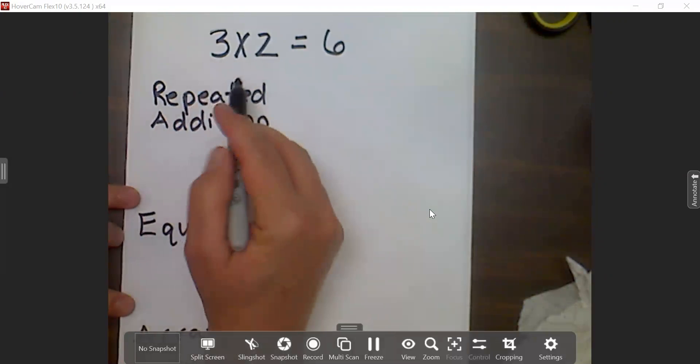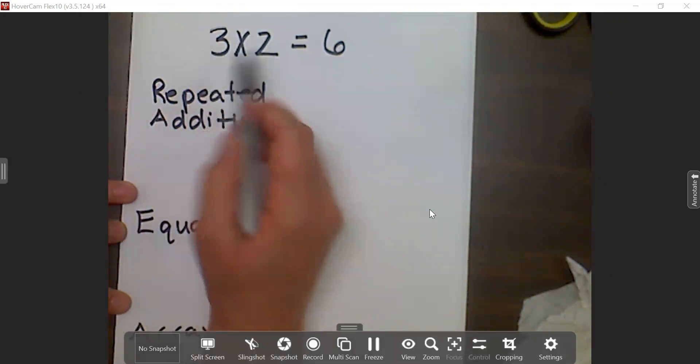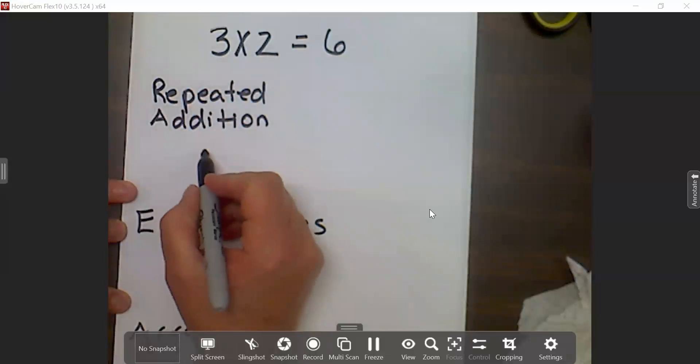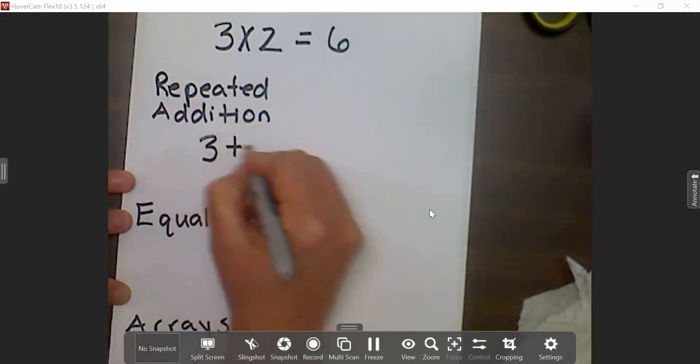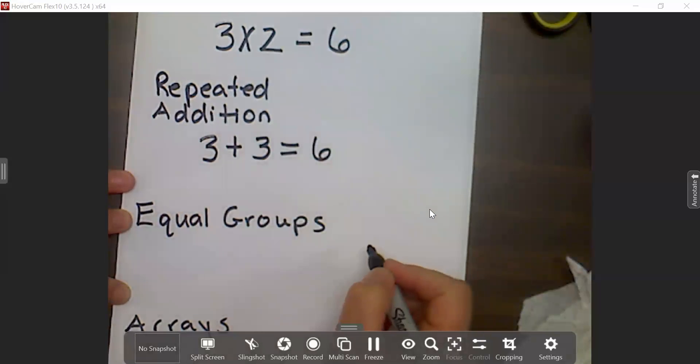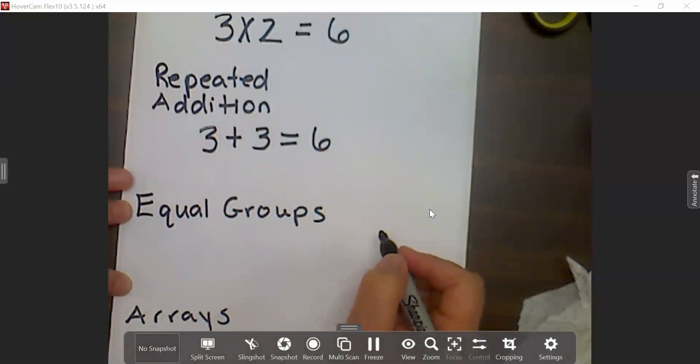So my problem is telling me that I have three two times. So my repeated addition would be three plus three equals six. Very simple.